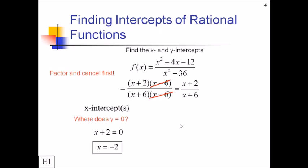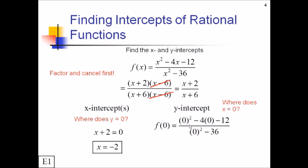For y-intercepts, we're just asking where does x equal zero, so we plug x equals 0 into the original function. Zeroing out everything with an x, we get negative 12 over negative 36, which reduces to 1 third. Now the question is whether we'd get a different answer using the simplified form — on this problem, no: you'd get 2 over 6, which also reduces to 1 third. But sometimes plugging zero in for x would zero out everything in the numerator and denominator in the original but not in the simplified form. So to make sure you're catching when your y-intercept doesn't actually exist, you need to plug this into the original function.